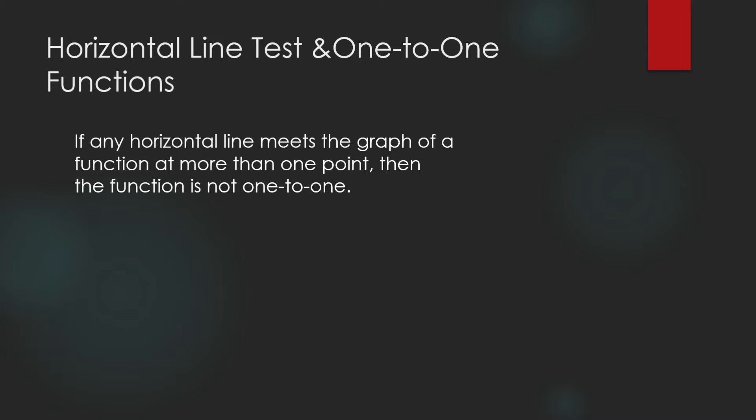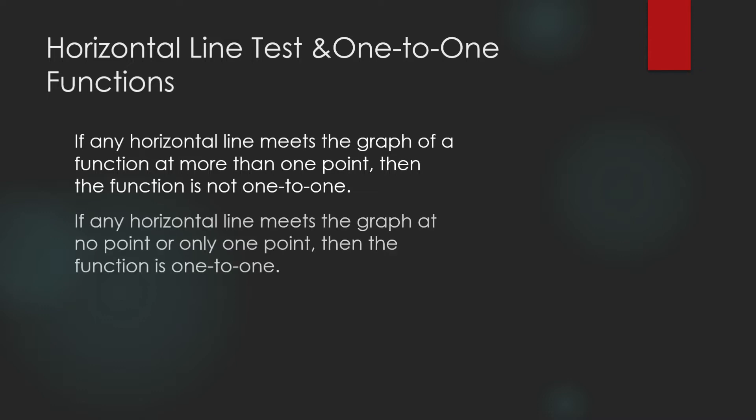How can we tell if a function is one-to-one? We do the horizontal line test. If any horizontal line meets the graph of a function at more than one point, then the function is not one-to-one. Equivalently, if any horizontal line meets the graph in exactly one point or no point at all, then the function is one-to-one. We are concerned about one-to-one functions because only they are sure to have an inverse function.